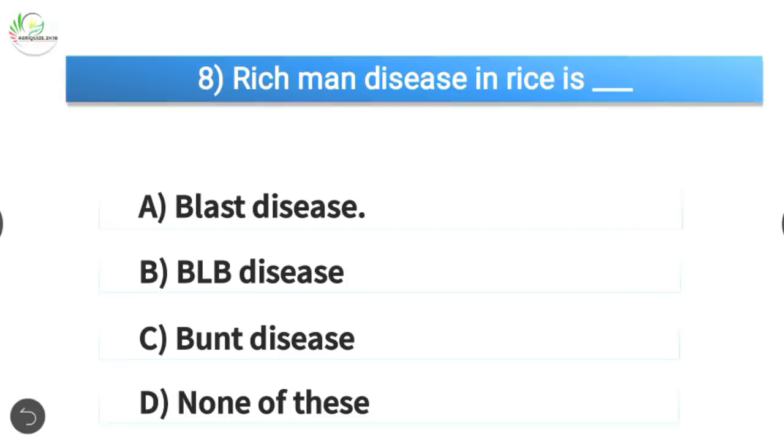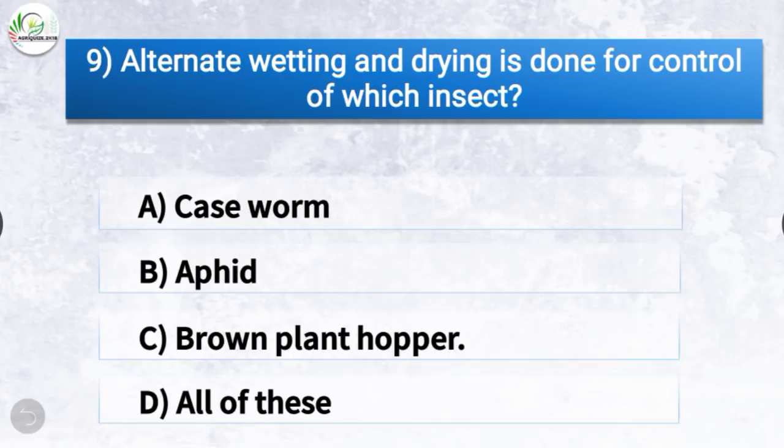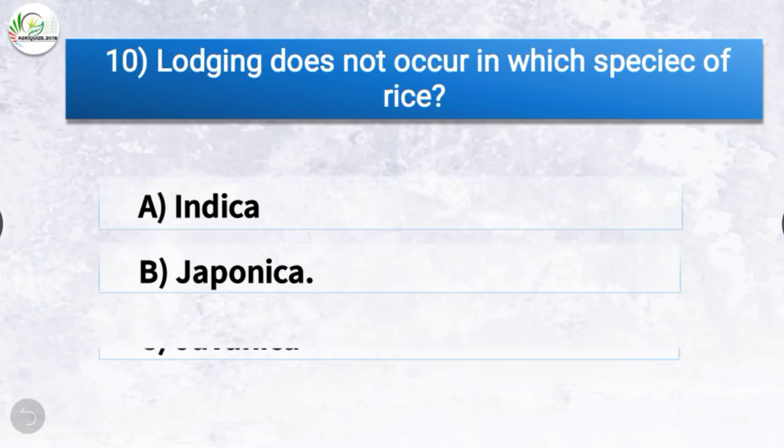Question number nine: Alternate wetting and drying is done for control of which insect? The correct answer is brown plant hopper. Alternate wetting and drying is done for control of the brown plant hopper.